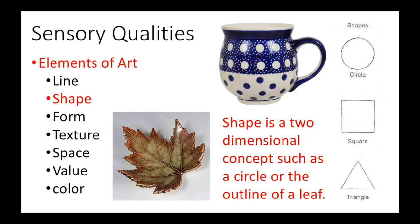Shape is a two-dimensional concept, such as a geometric circle, square, or triangle. The outline of an object like a leaf also creates a shape — an organic shape. Shapes can be representational or abstract. They can also be symbolic and carry significant meaning in a work of art. The polka dot shapes used to decorate a mug, for example, can relate to the shape of the body of the mug as well as its circular lip and foot.